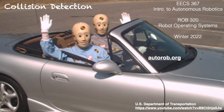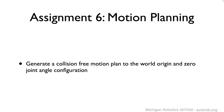For today's lecture the purpose is to help with assignment six, where we're going to be looking at a motion planning algorithm known as RRT Connect. We talked about RRT Connect and sampling-based planning algorithms a few lectures ago. Today we're discussing how we can use and implement collision detection so that our motion planner is able to generate a collision-free plan that takes the robot from some arbitrary starting configuration to the world origin at the zero joint angle configuration.